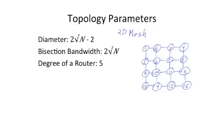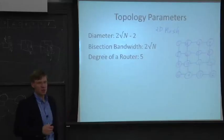OK, so let's take a look at some of these topology parameters here for a 2D mesh. So here we have a simple 2D mesh. Our diameter for this mesh is going to be 1 hop, 2 hops, 3 hops, 4 hops, 5 hops, 6 hops.